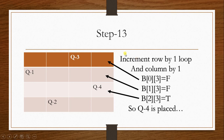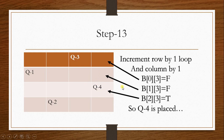Step 13: After placing Q3, we check the place for Q4. The next column is column number 3. Row is incremented through positions [0][3], [1][3], and [2][3]. Position [2][3] is free from attack, so queen number 4 is placed there. We have now successfully placed N queens on the N by N board.